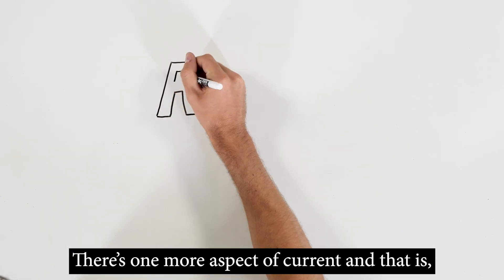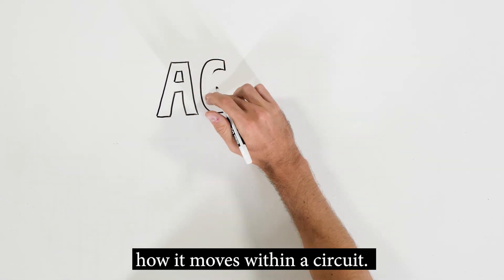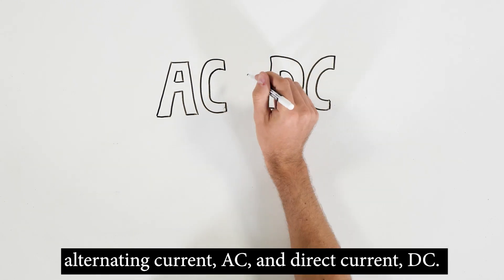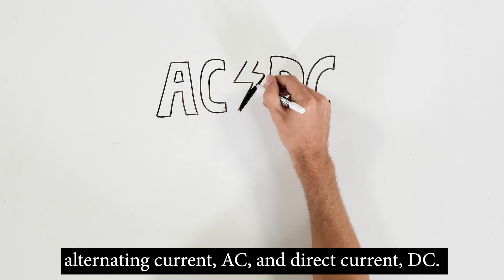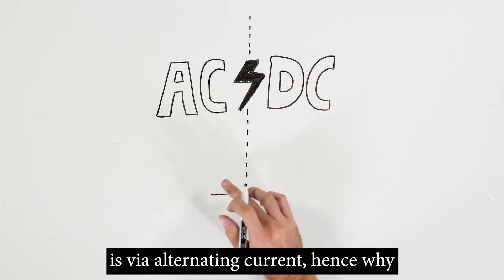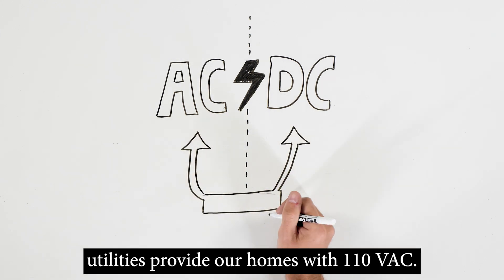There's one more aspect of current, and that is how it moves within a circuit. You will encounter two types of current: alternating current, AC, and direct current, DC. The most efficient way to deliver electrical current across long distances is via alternating current, hence why utilities provide our homes with 110 volts AC.